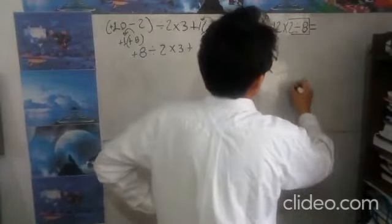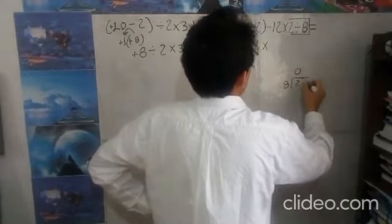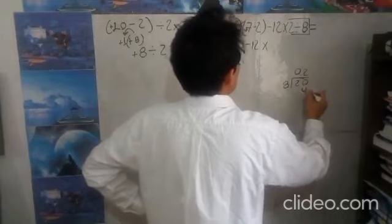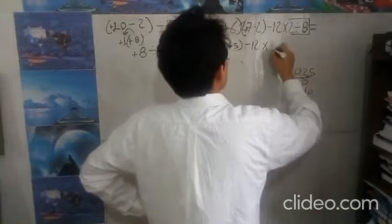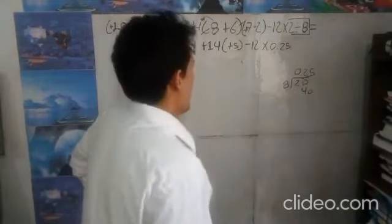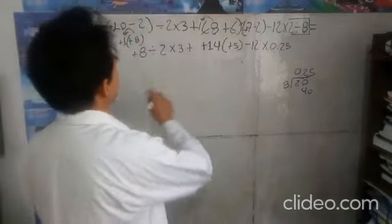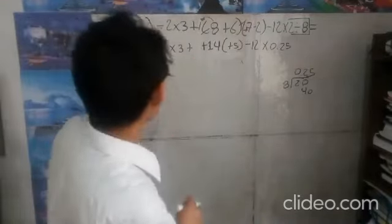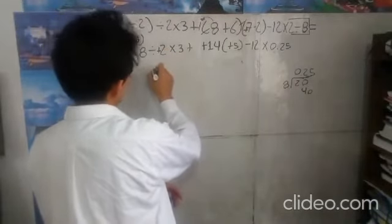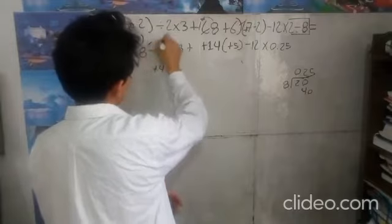2 entre 8: 2 por 8 son 16, para 20 son 4, y 5 por 8 son 40. Resultado: 0.25. Ahora procedemos, ya acabamos con divisiones, vamos con multiplicaciones. Aquí nos queda una división más: más entre más es a más, 8 entre 2 es a 4. Ya están, por 3.